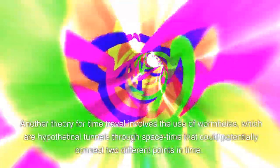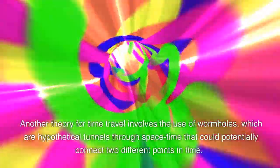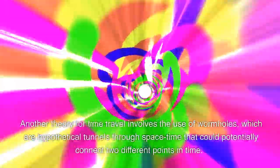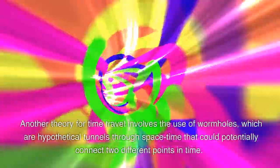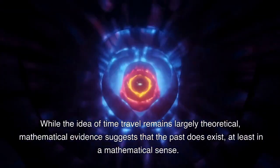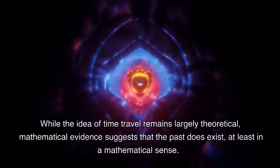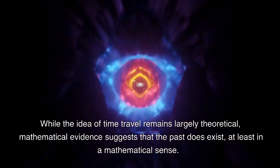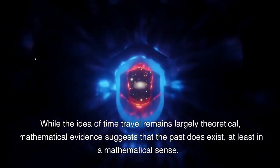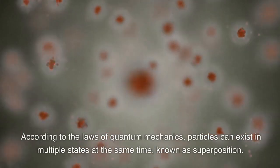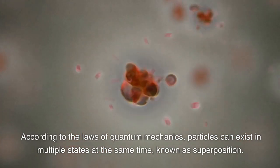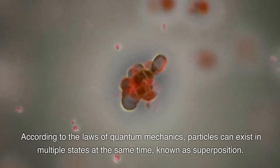Another theory for time travel involves the use of wormholes, which are hypothetical tunnels through space-time that could potentially connect two different points in time. While the idea of time travel remains largely theoretical, mathematical evidence suggests that the past does exist, at least in a mathematical sense. According to the laws of quantum mechanics, particles can exist in multiple states at the same time, known as superposition.